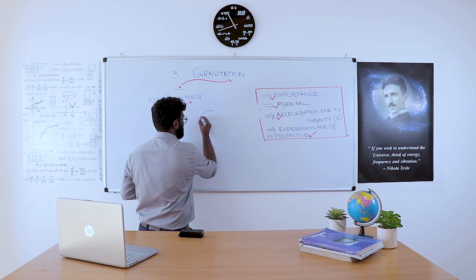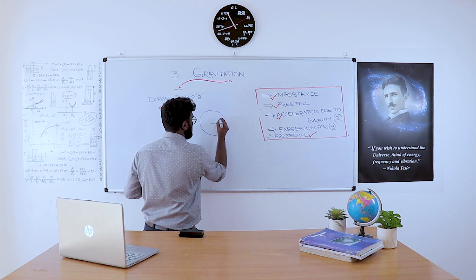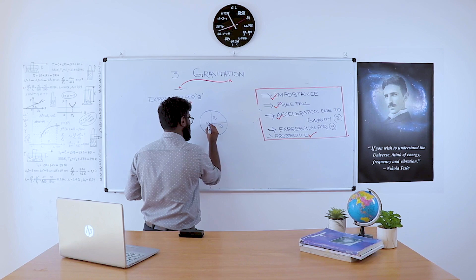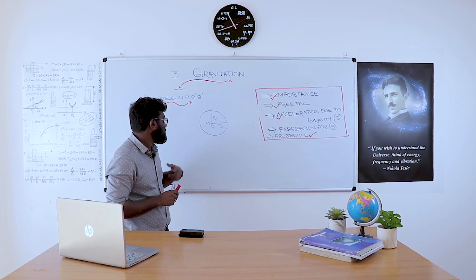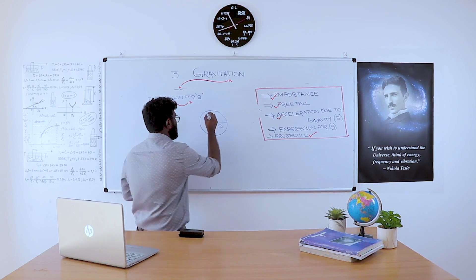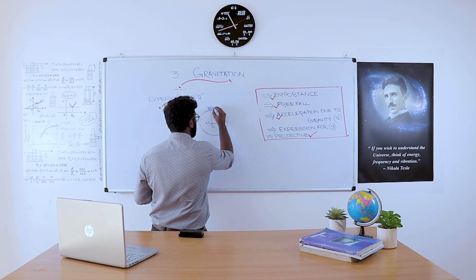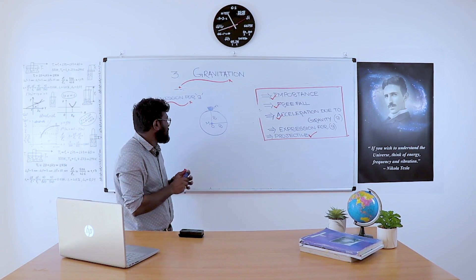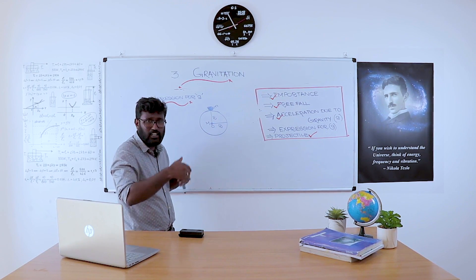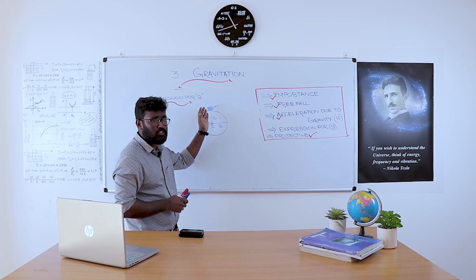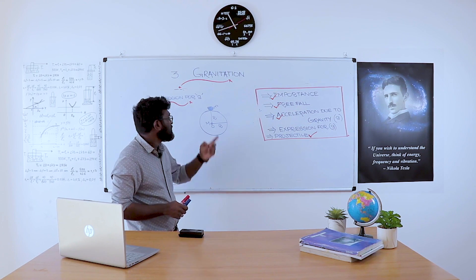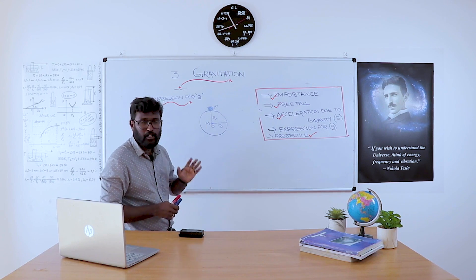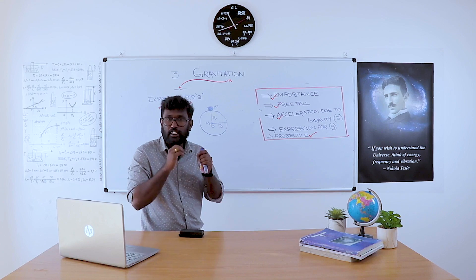To derive the expression for G, consider earth to be a perfect sphere of mass capital M and radius capital R, assuming that the mass is concentrated at the center. The radius of any particle on the surface is neglected as compared to the radius of the earth, since the radius of the earth is so much greater than the radius of the particle.